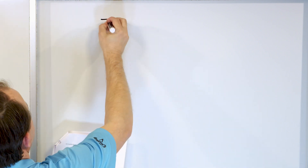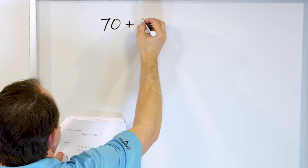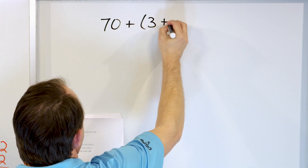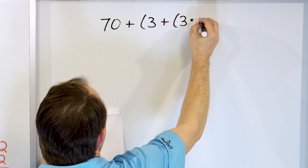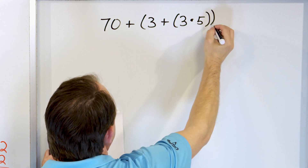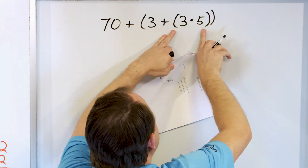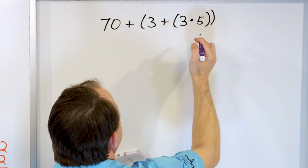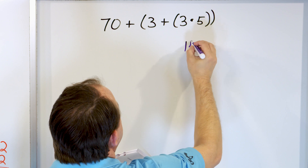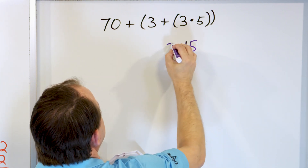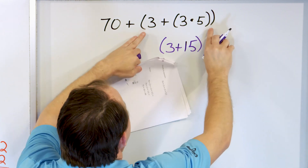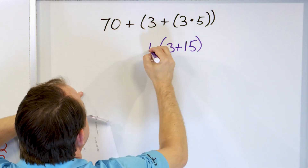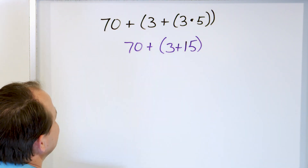That was the halfway mark of these problems. Let's take a look at 70 plus, open parentheses, 3 plus, open another parentheses, 3 times 5, close parentheses, close parentheses. This is the innermost set of parentheses, so I must do this one first. What is 3 times 5? It's going to be 15, but I still have the plus 3 to do, all still encapsulated in the outer parentheses, and then I still have the plus 70.